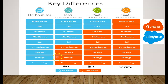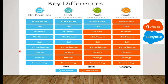With Infrastructure as a Service, Microsoft manages networking, storage, servers, and virtualization components, and we get to manage our OS, middleware, runtime, and everything above it. This gives us the most control over how our services are running and what we can do on them, like installing an application or configuring something specific.